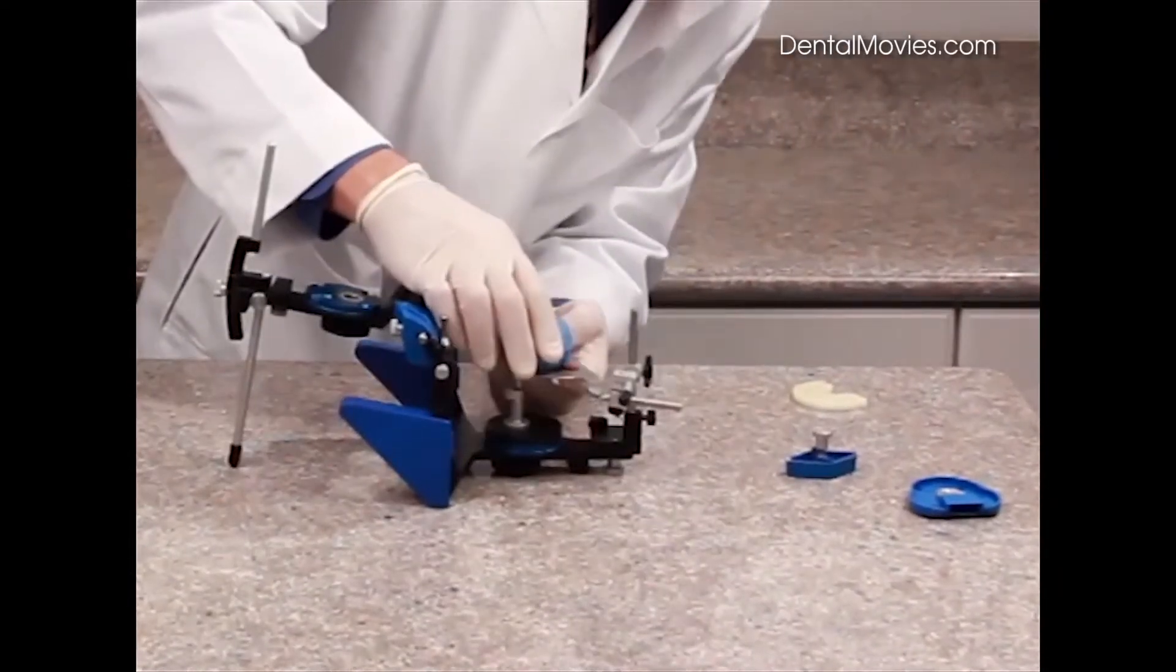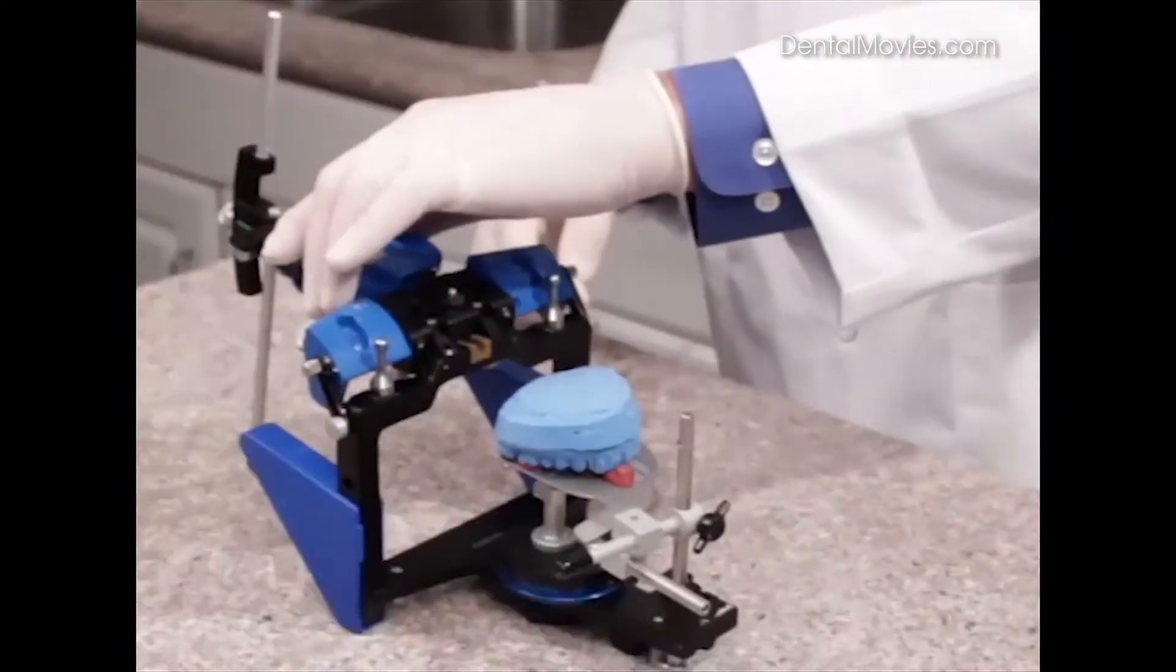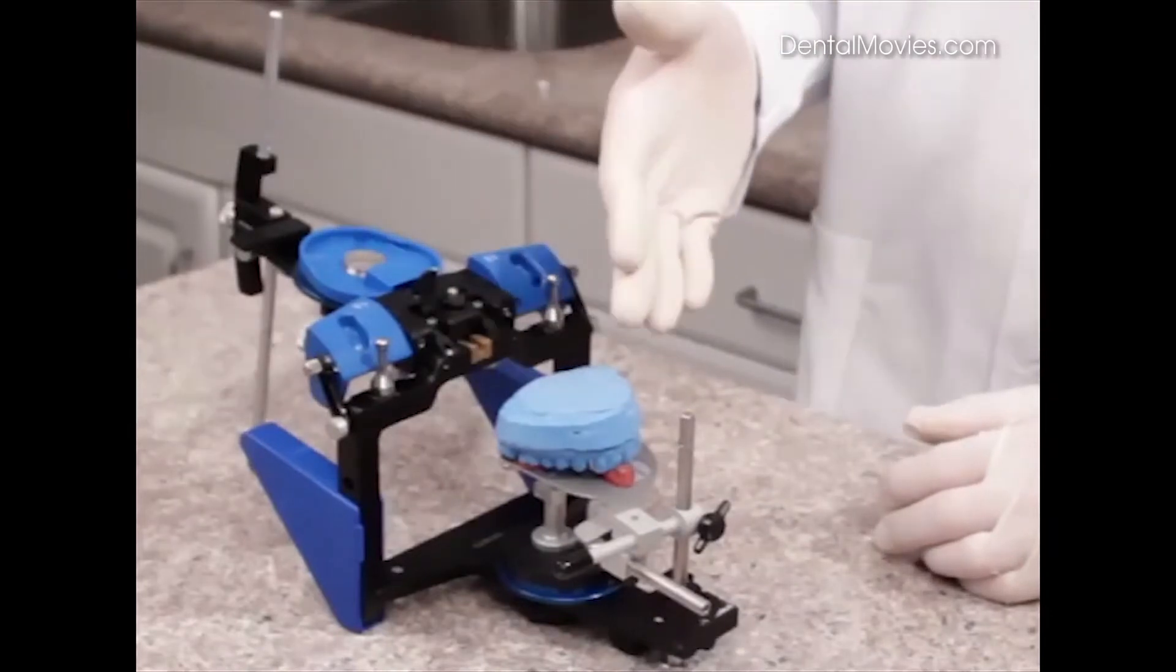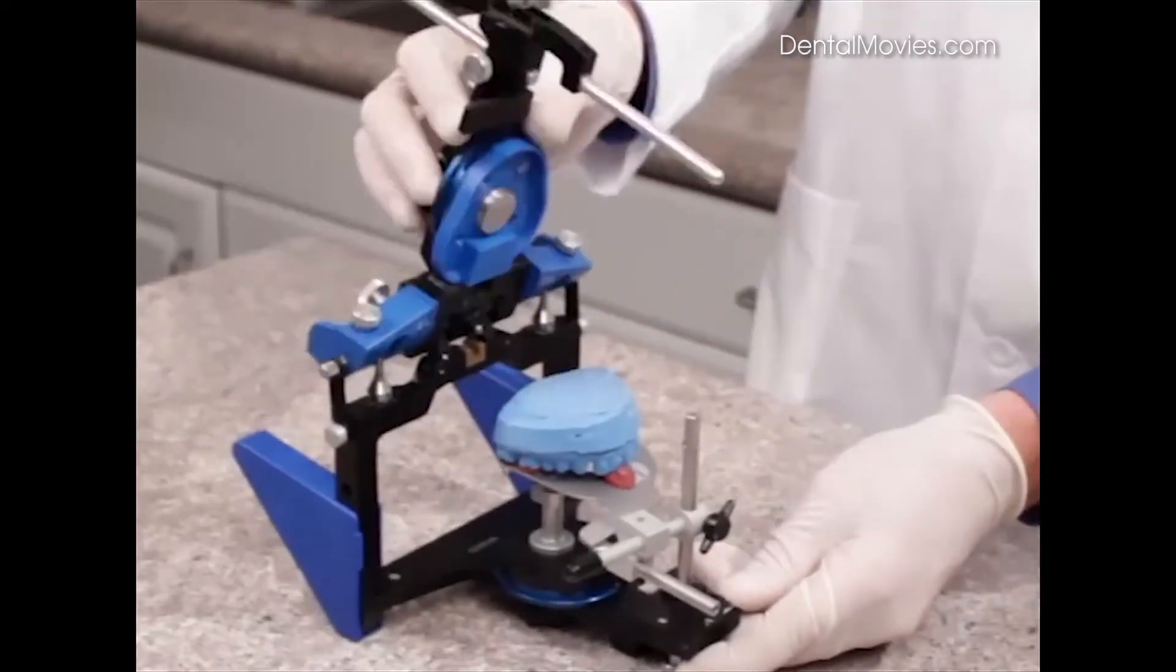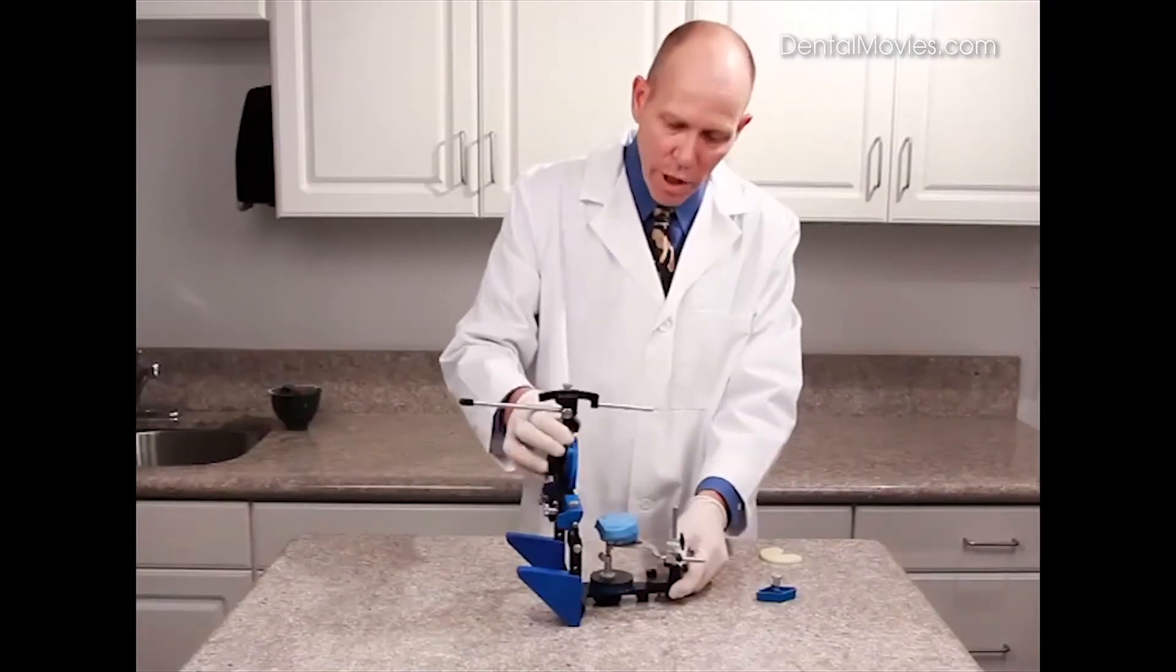We can now add our cast to the indentations on our bifork registration. We can add a mounting plate to the upper frame. We can mix plaster at this time and add to the mounting plate and to the cast, making a connection of the upper cast to the upper frame of the articulator.